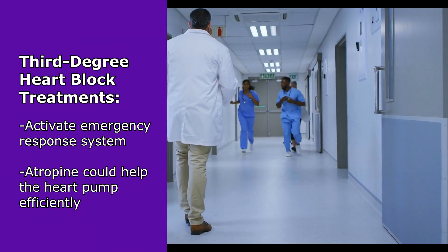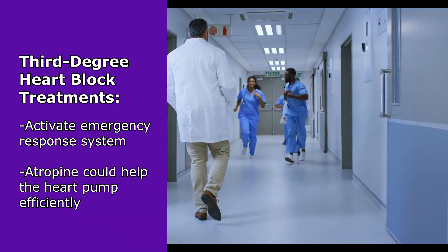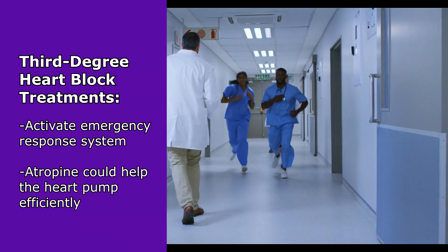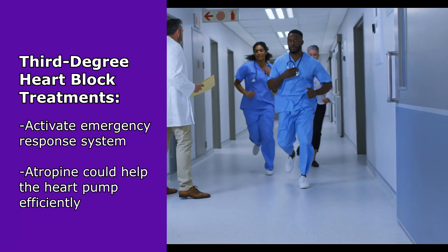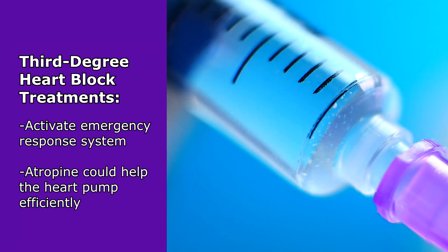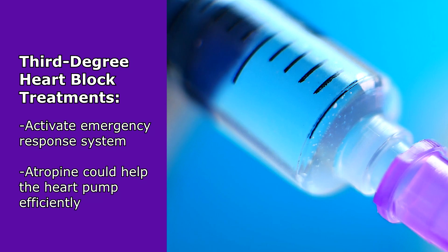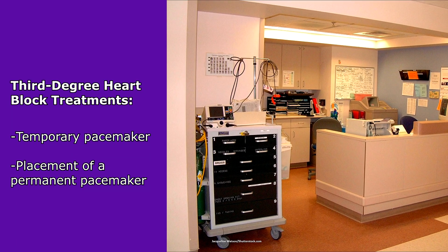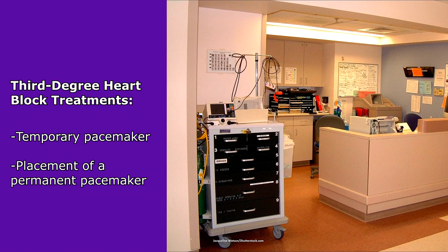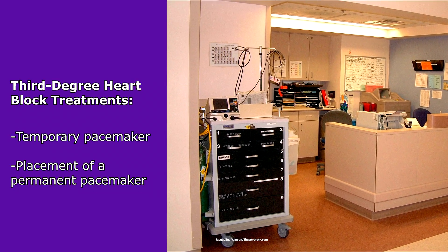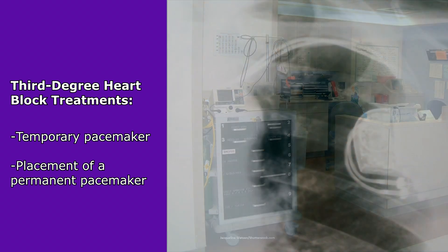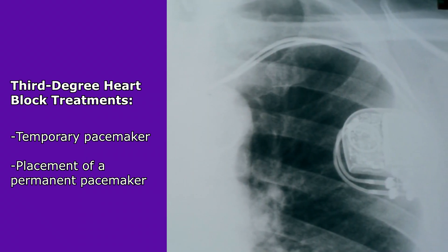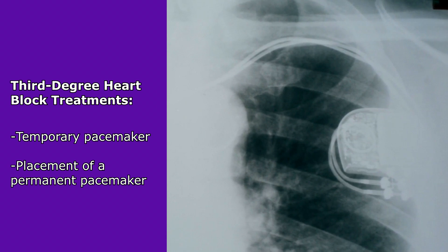You want to activate the emergency response system to get a team in the room to help you. Atropine can be administered to help the heart pump more efficiently, or the patient could be connected to a temporary pacemaker to get the heart beating correctly and maintain cardiac output. Eventually, the patient will need a permanent pacemaker implanted.